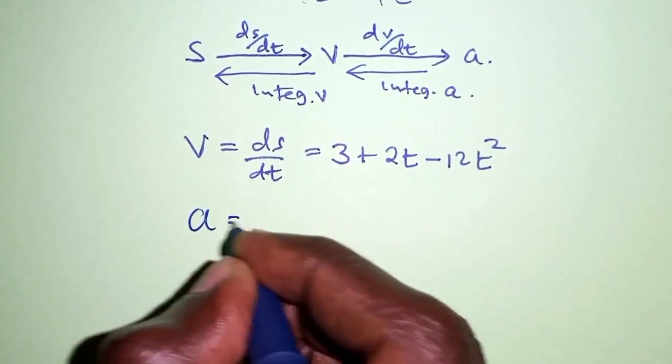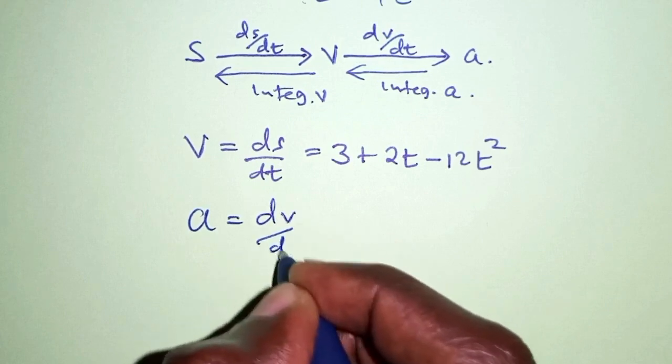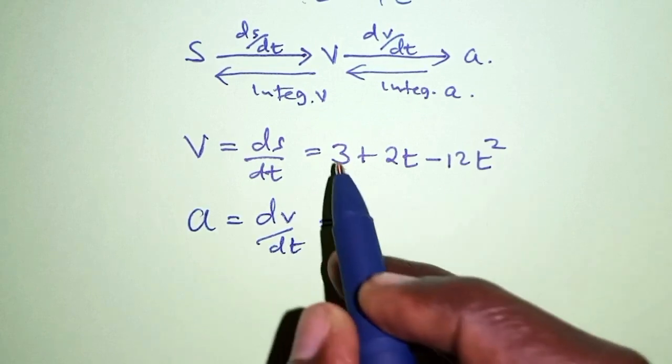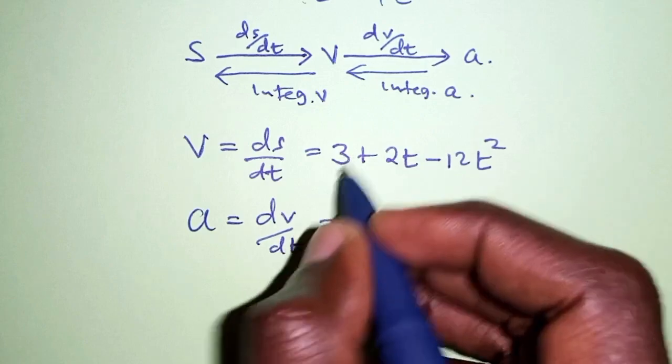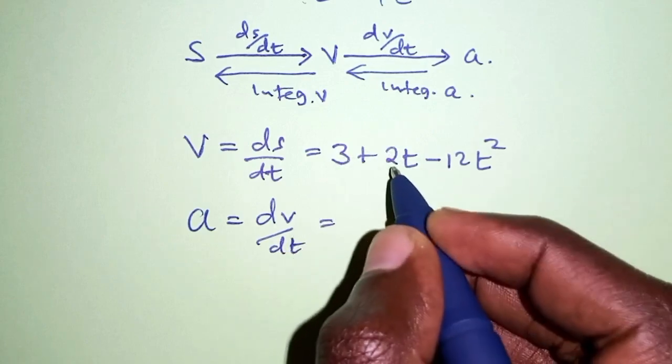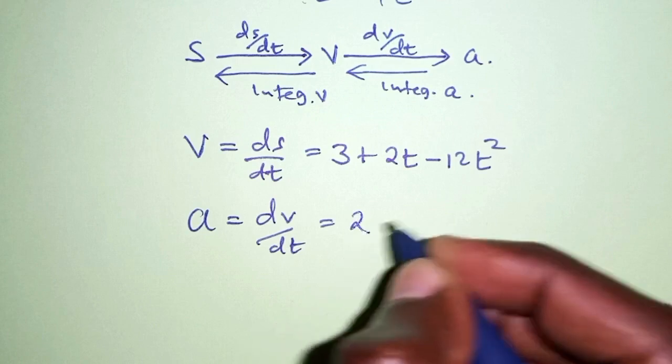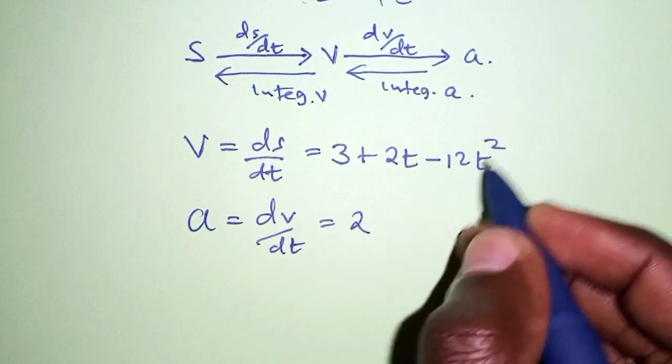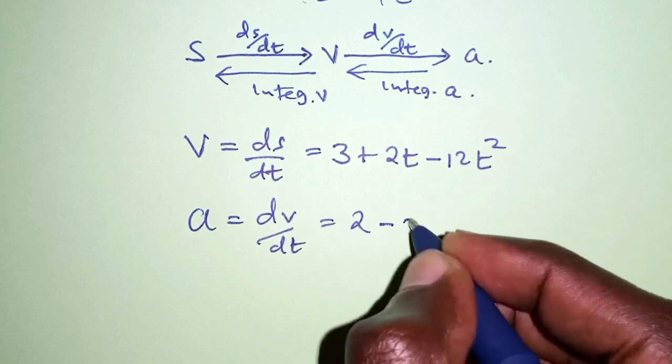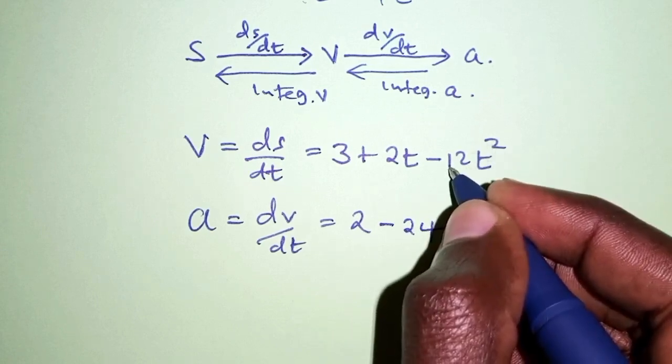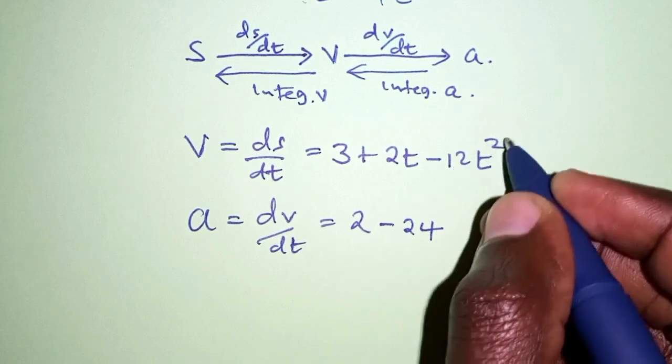Acceleration is dv/dt. That means we're differentiating this again. So 3 differentiated becomes 0, plus 2t becomes 2, and then minus 12t² becomes minus 24 - that is 2 times 12, that is 24 - and then the power reduces by 1.